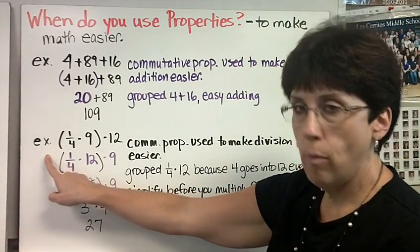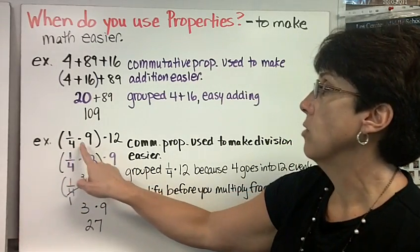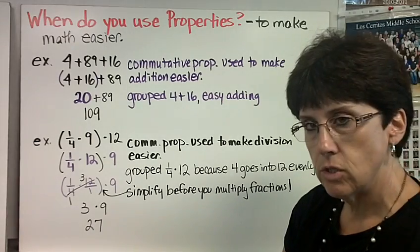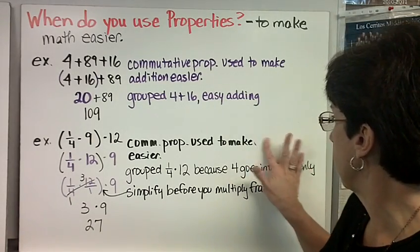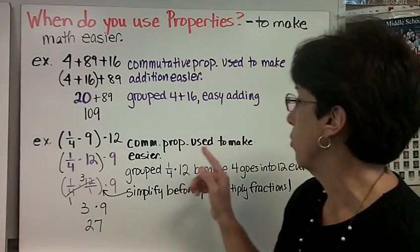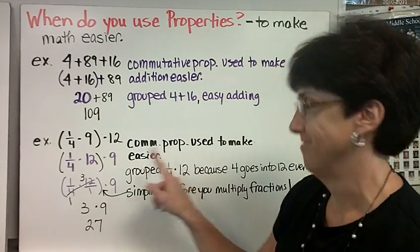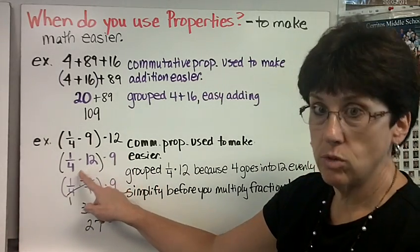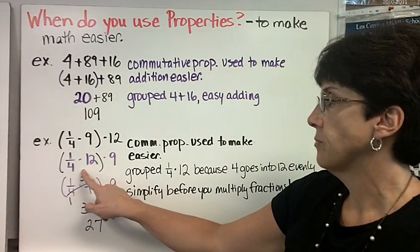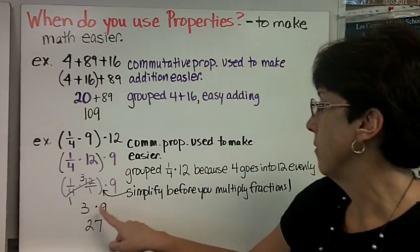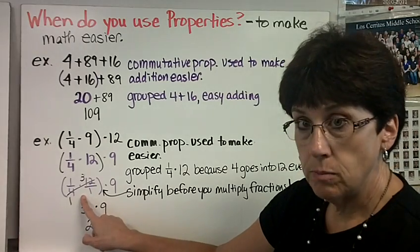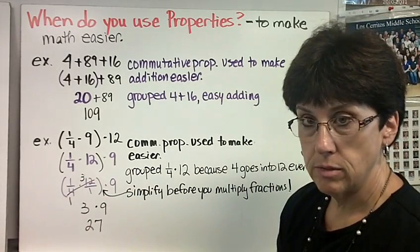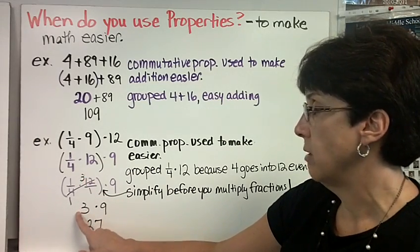Here's an example with multiplication. Oh my gosh, and fractions. Don't worry. One-fourth times 9 times 12. I'm going to use the commutative property to make my multiplication easier. So I'm going to group the one-fourth with the 12, because I know that 4 goes into 12 evenly. 4 divides into 12 easier. So now it's one-fourth times 12 times 9. I grouped these together. Now, before I multiply, I'm going to simplify. 4 is a factor of 12. 4 goes into itself once, 4 goes into 12 three times. Now, 1 times 3 is 3. Now my problem is just 3 times 9.